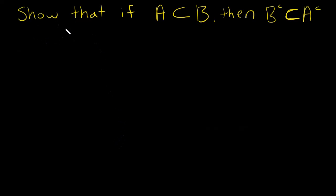Alright, so in this video we're going to show that if event A is a subset of event B, then B complement is going to be a subset of A complement. I'm going to show this using Venn diagrams.